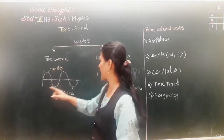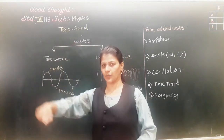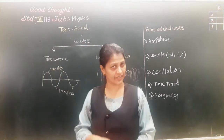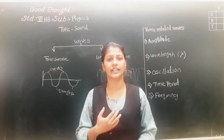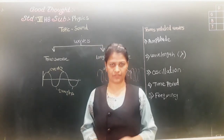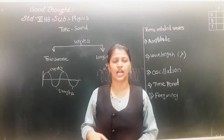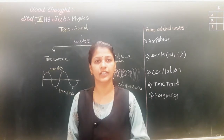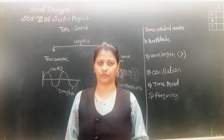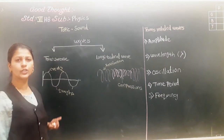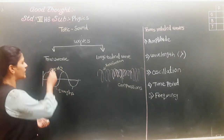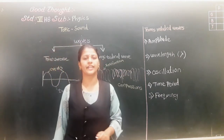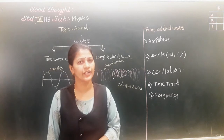You might have also seen light rays — these are also in the form of waves. Sound waves are produced when we produce sound — they are in the form of waves. The waves are classified into two types: transverse waves and longitudinal waves.